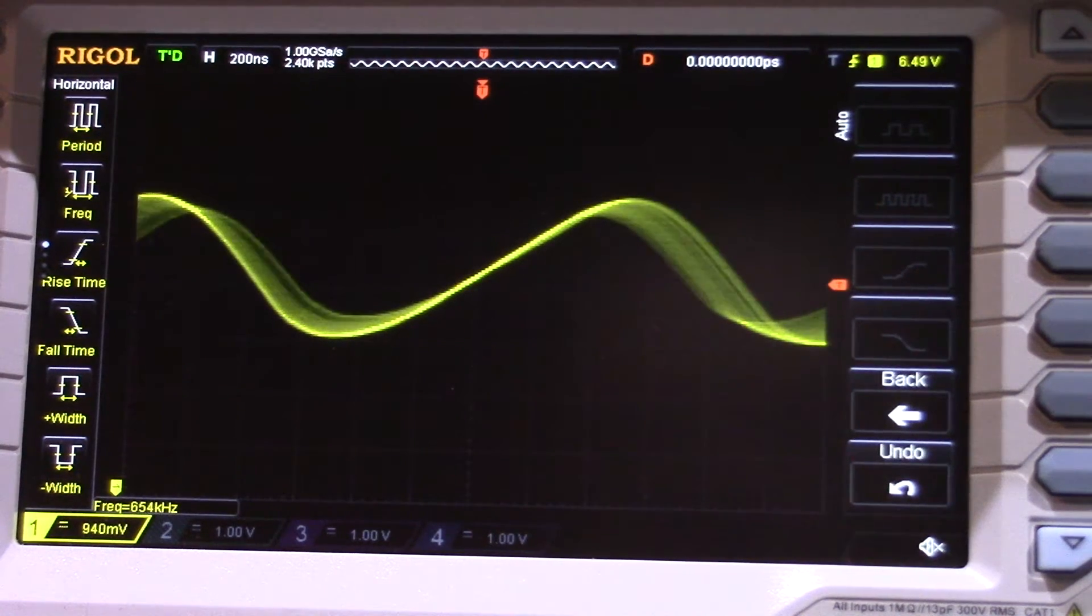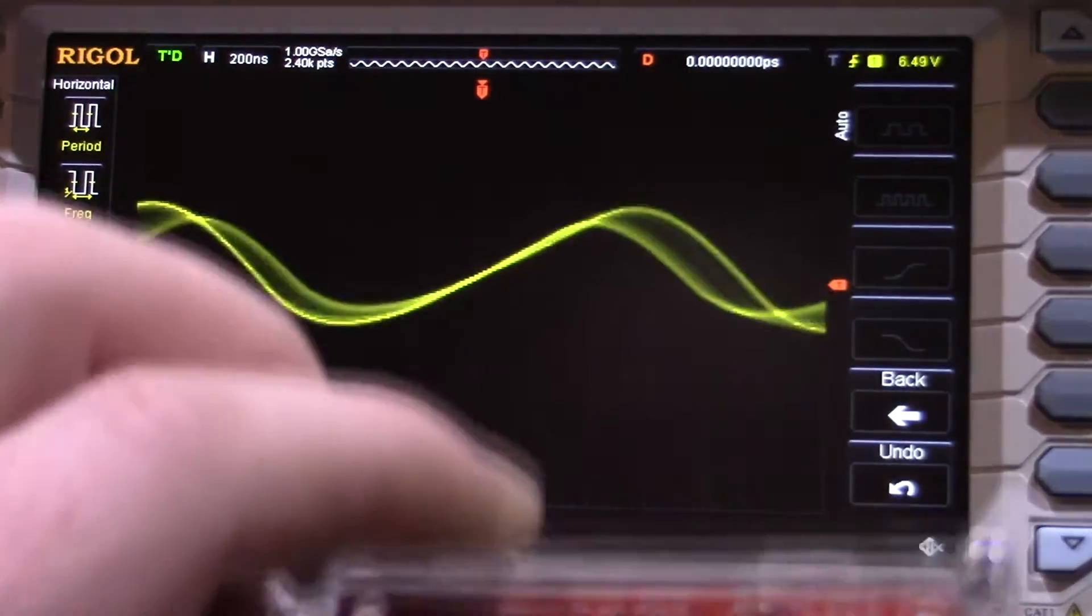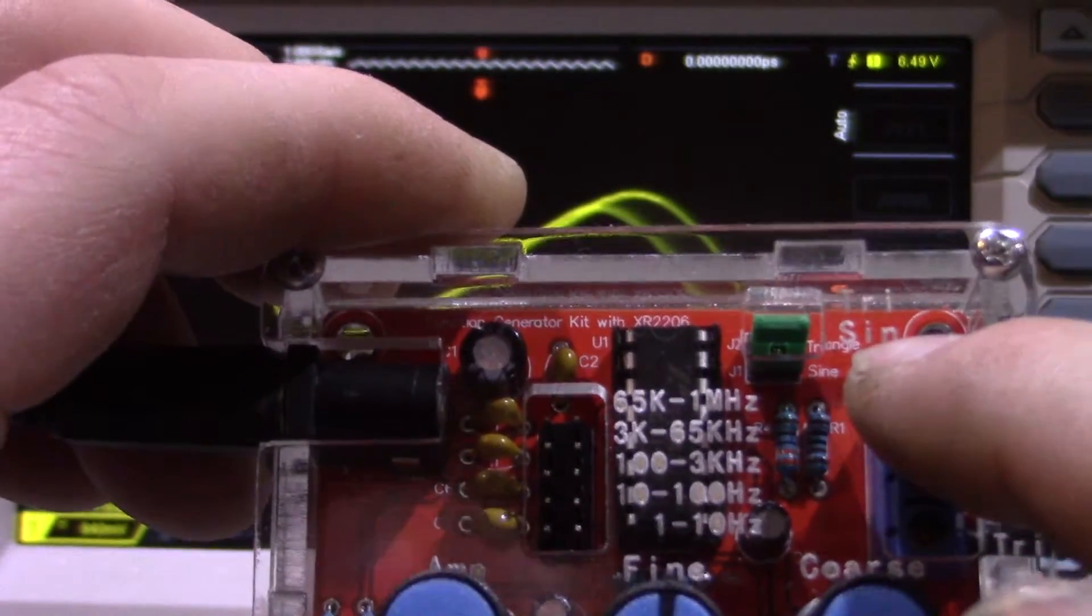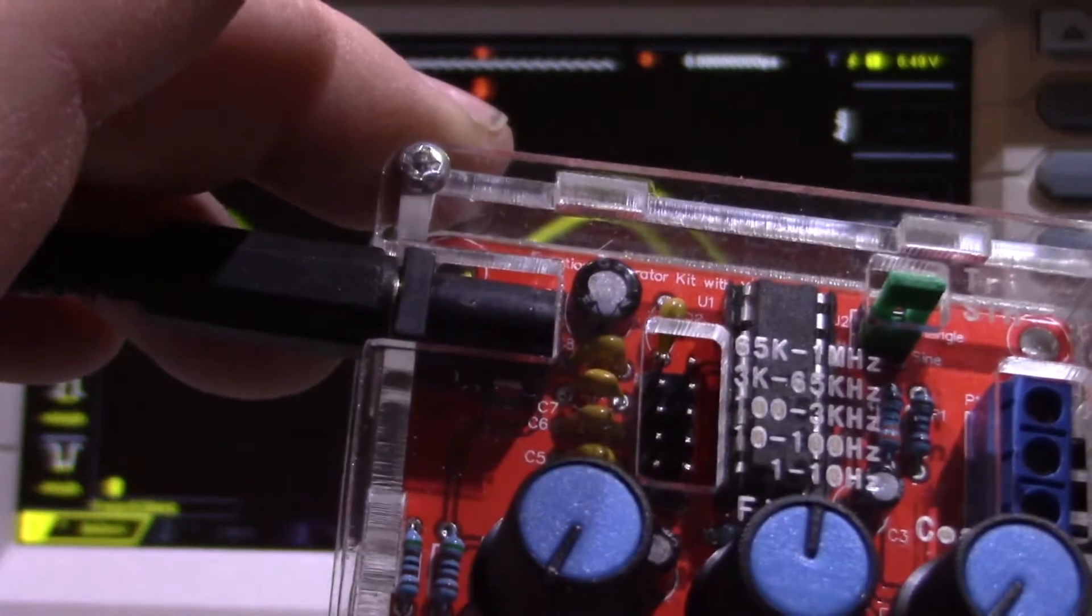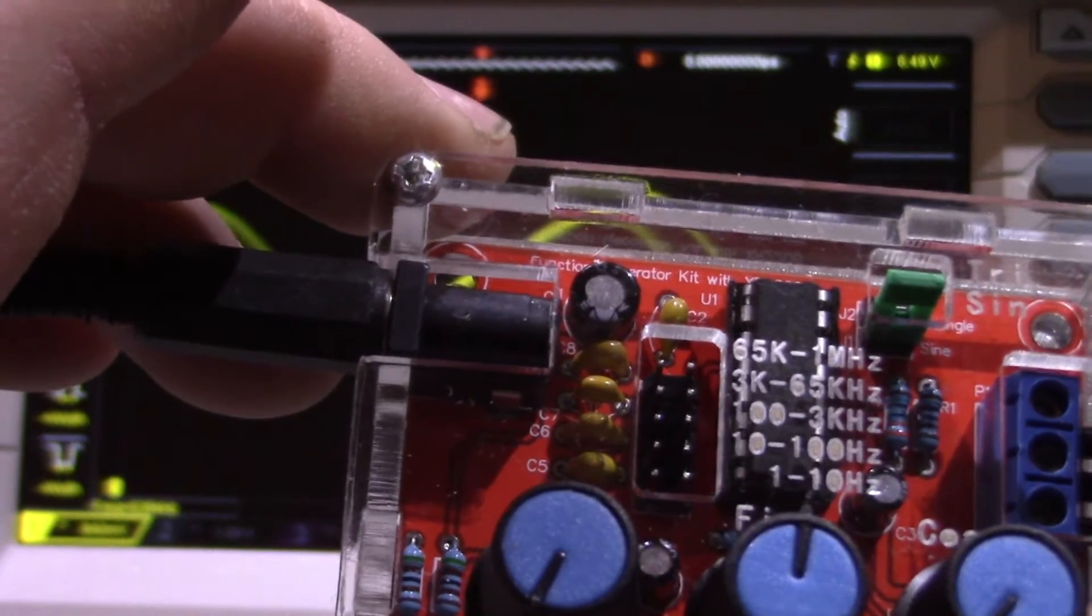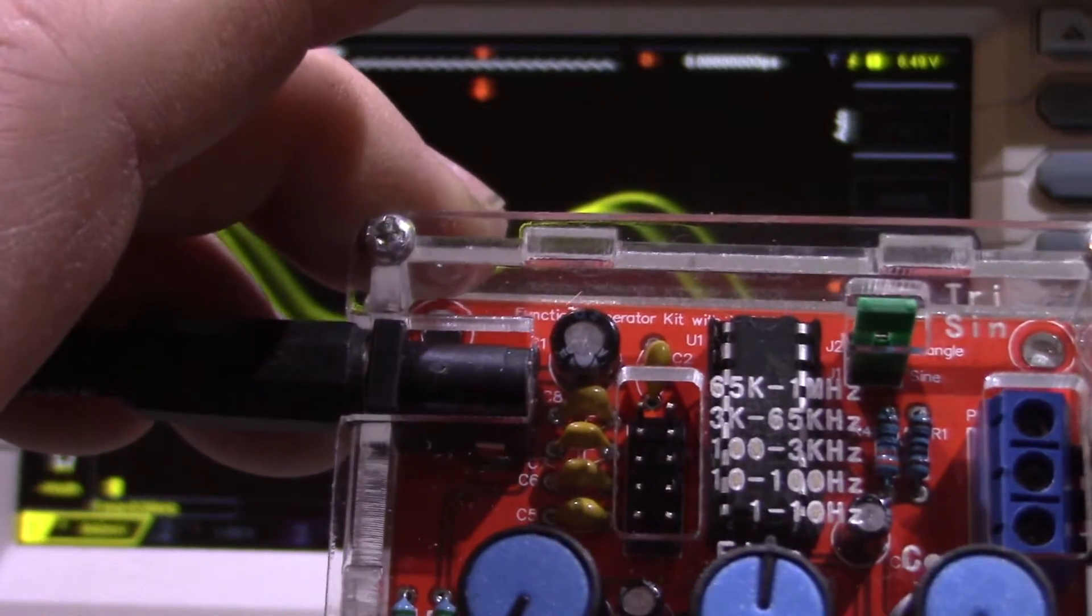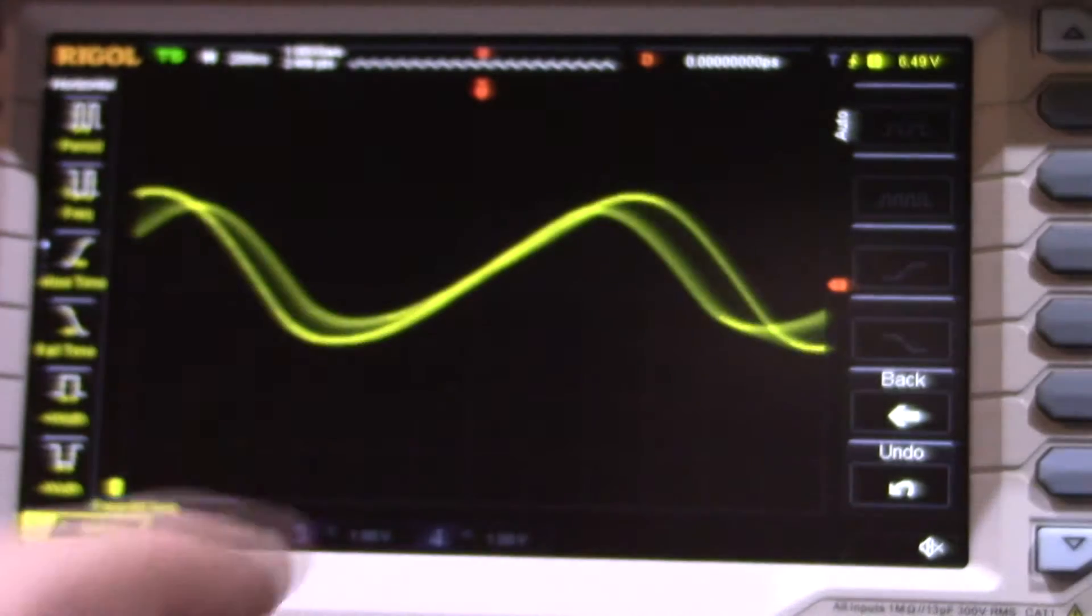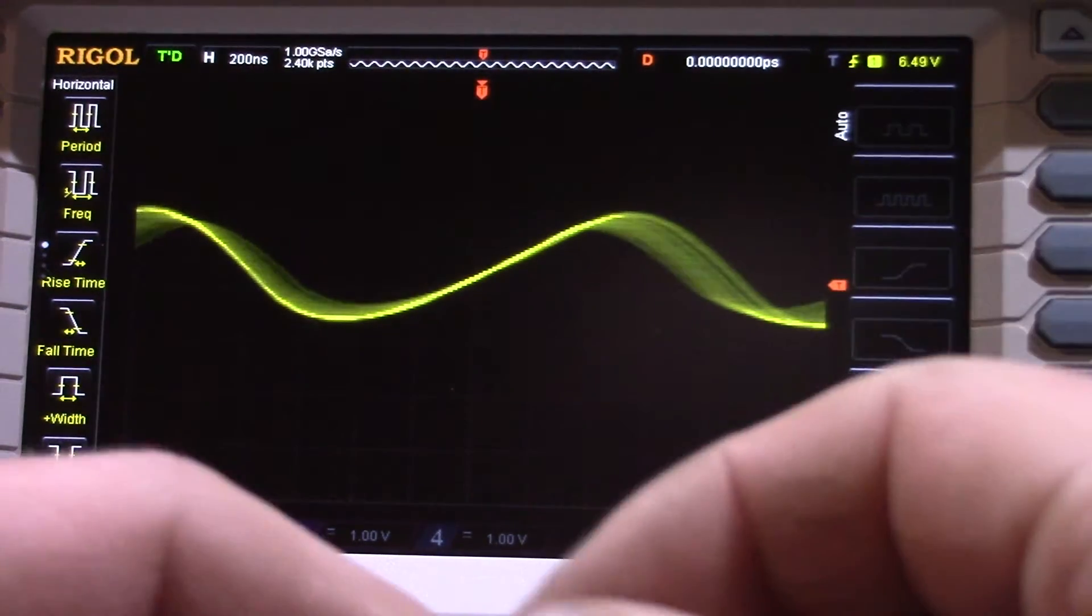Now you get two of these little jumpers for the unit, and as you can see here, I've got one there set on the sine wave. Of course, there's this header over here with the options for the different frequency ranges: 1 to 10 Hz, 10 to 100, 100 to 3 kHz, 3 kHz to 65, and 65 kHz to 1 MHz. Of course, we're not going to get a clean waveform unless we're actually selecting a frequency range that we want.